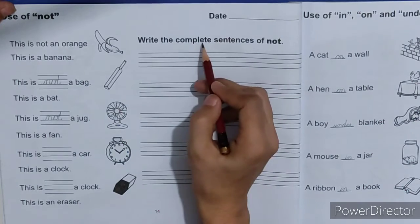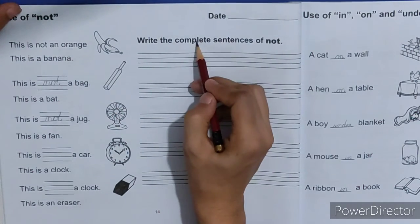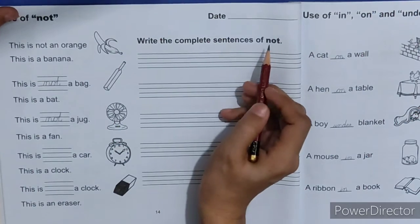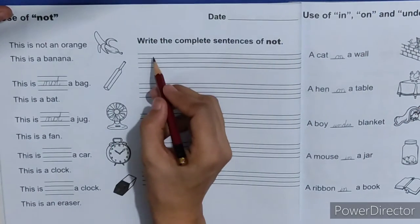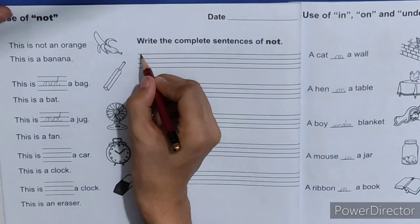Write the complete sentences of not. Toh piyare bacho hum ne jou not wala sentence hai woh yahaan pere complete likhna hai. Mai aapko first line likhe dikhha djeti ho.